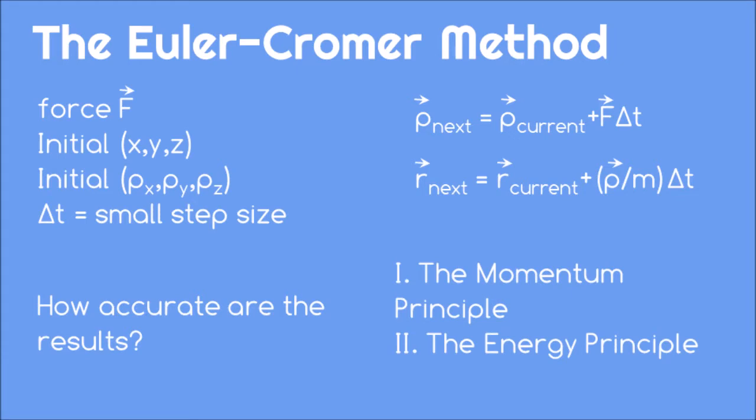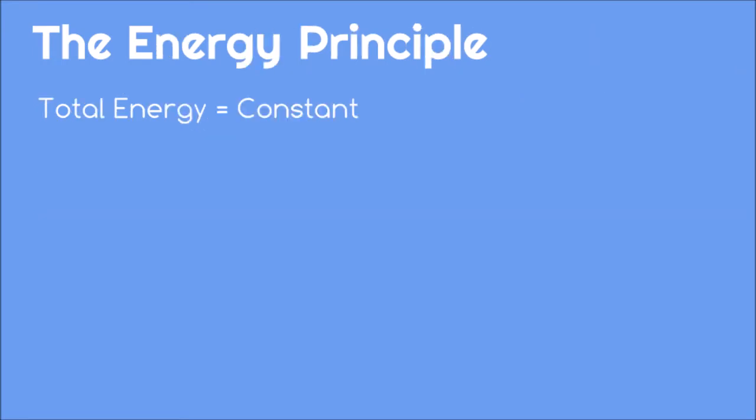We've already used the momentum principle to set up the Euler-Cromer method, so we can use the energy principle to check our results. The energy principle says that as a system changes position and velocity, the total amount of energy should remain constant.